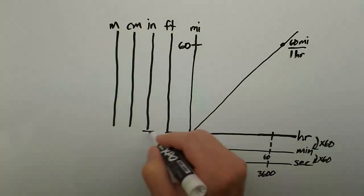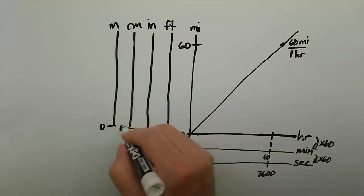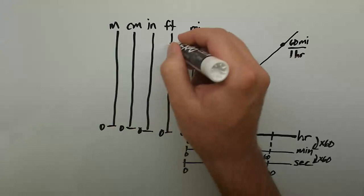All the number lines will have a lower boundary of 0, and we'll want to find all the distances that are equal to 60 miles.